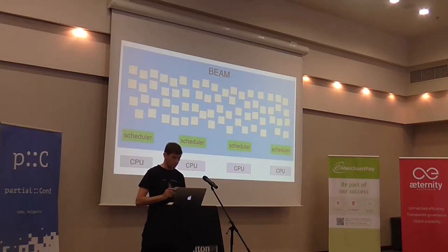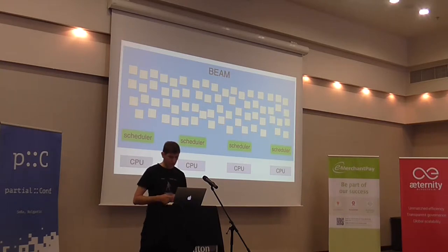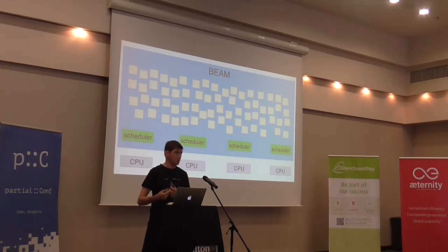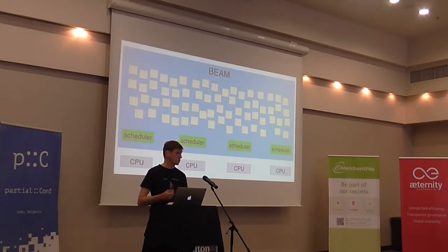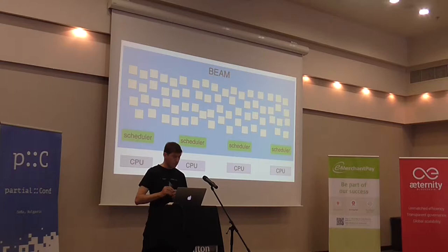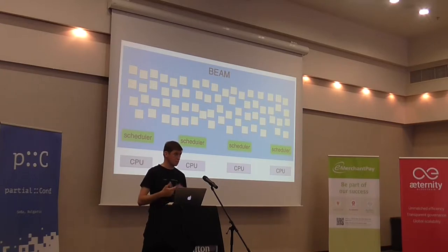Let me make sure we're all on the same page with a little bit about how the runtime works. You build your system in Elixir, you start it, and what happens is a single operating system process is started — this is your own instance of BEAM. Your entire system is running in that single OS process. Inside that, you have some threads — in particular the scheduler threads. By default you have one scheduler per CPU core, though you can tweak this number. And then you have a bunch of these little yellow boxes — these are Elixir processes, or BEAM processes. We just call them processes.